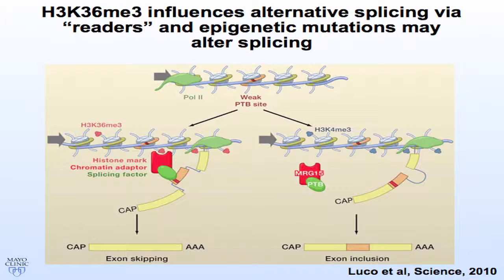Why look at alternative splicing and histone modifications? Tom Estelle in 2010 published a Science paper showing a link between epigenetic readers and alternative splicing. During transcription, RNA polymerase II opens genes for RNA transcription, and histone 3-lysine 36 trimethylation is recognized by a chromodomain adaptor protein called MRG15, which recruits alternative splicing factors such as polypyrimidine tract binding protein, suggesting a link between alterations of histone modifications and alternative splicing.